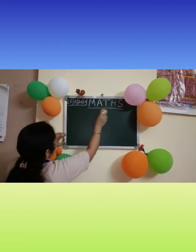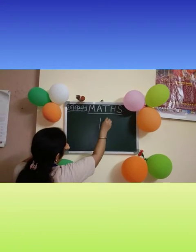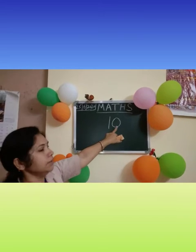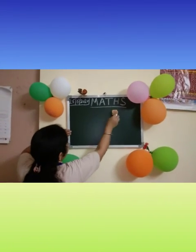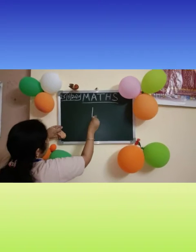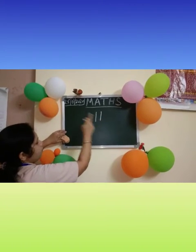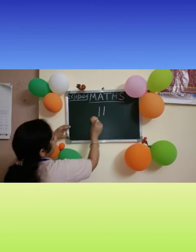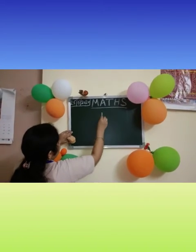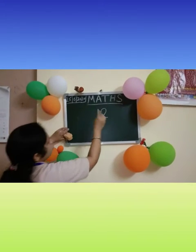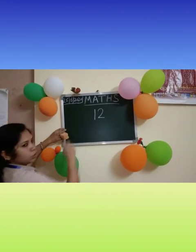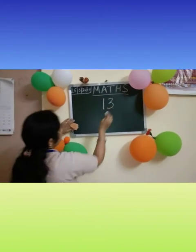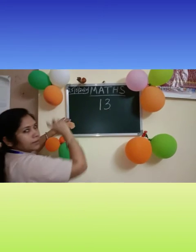Now next number 1, 0, 10. Repeat with me loudly children. 1, 0, 10. 1 and 1, 1, 1, 11. 1 and 2, 1, 2, 12. 1 and 3, 1, 3, 13.